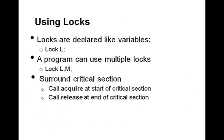So how do we use locks? Locks are usually declared like a variable. Most programming languages or operating systems have a lock data type that you can use to declare lock variables, as in the example here: lock L. Furthermore, a program can have multiple locks — you might have two locks named L and M — and when a program acquires a lock, it will explicitly say which lock it wants: acquire L or acquire M.